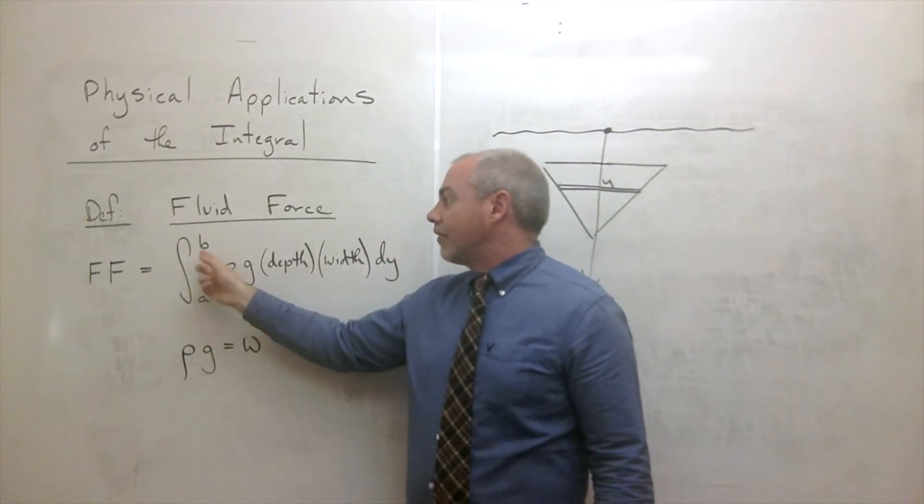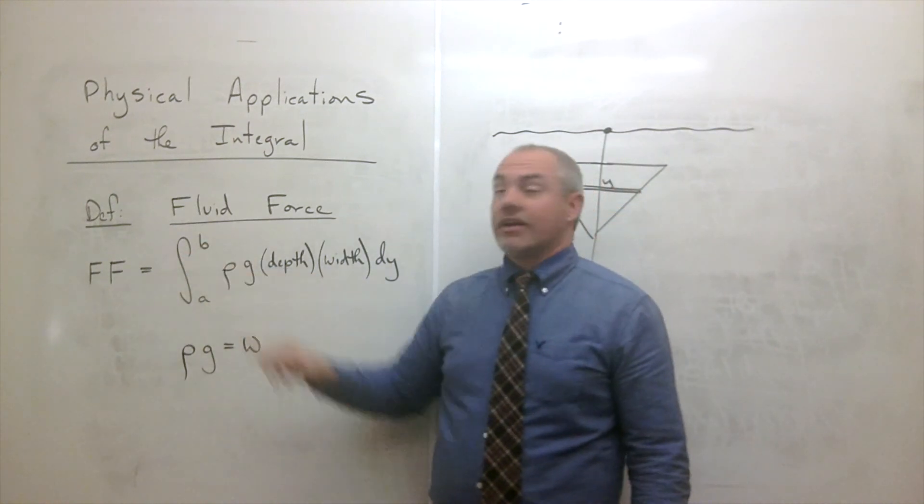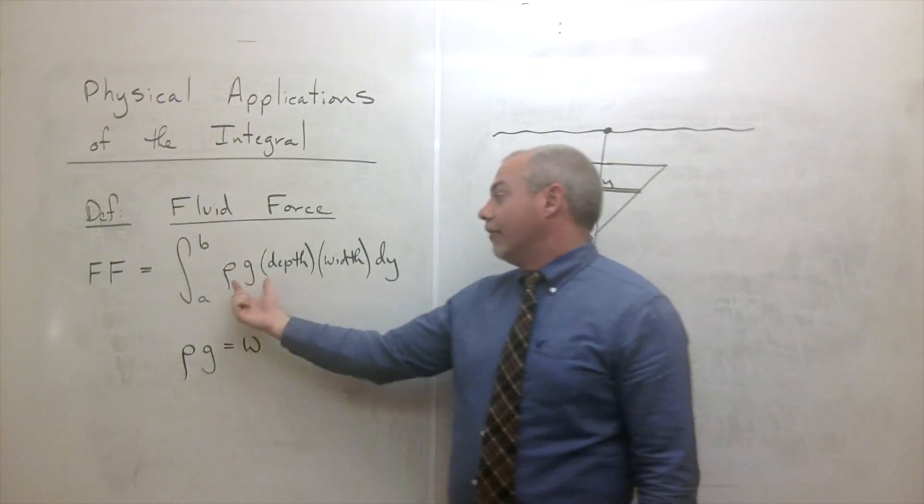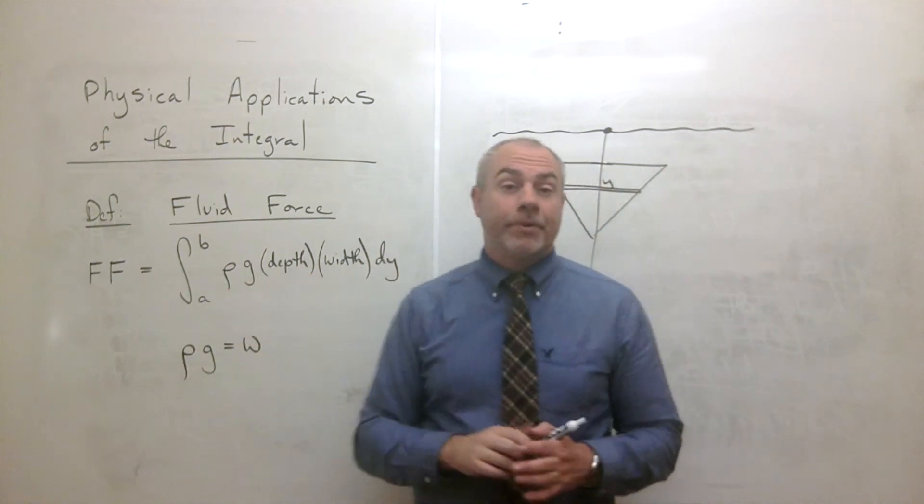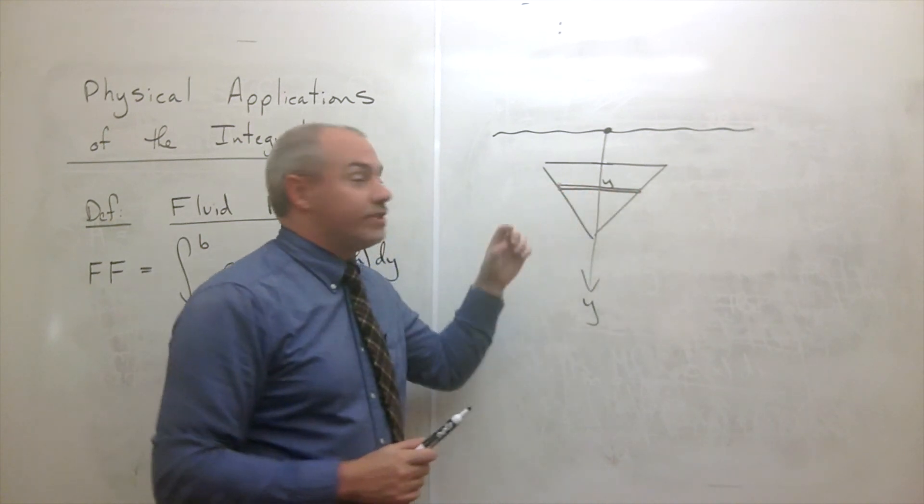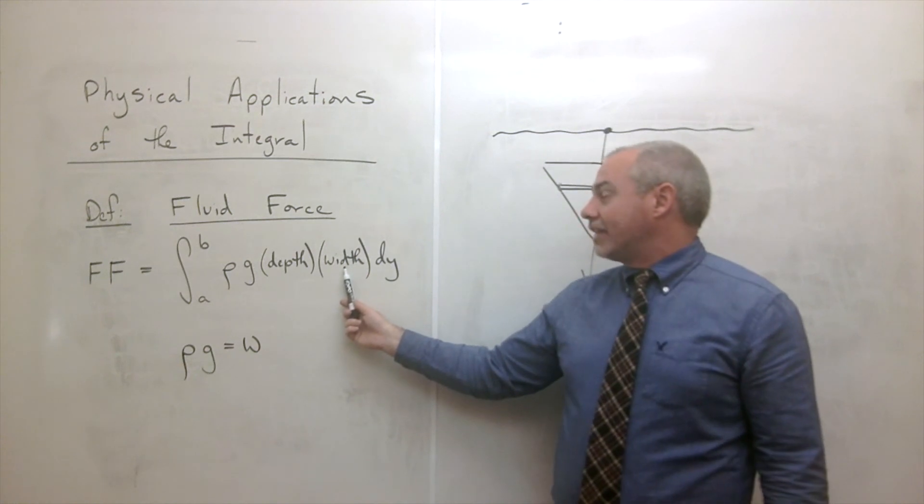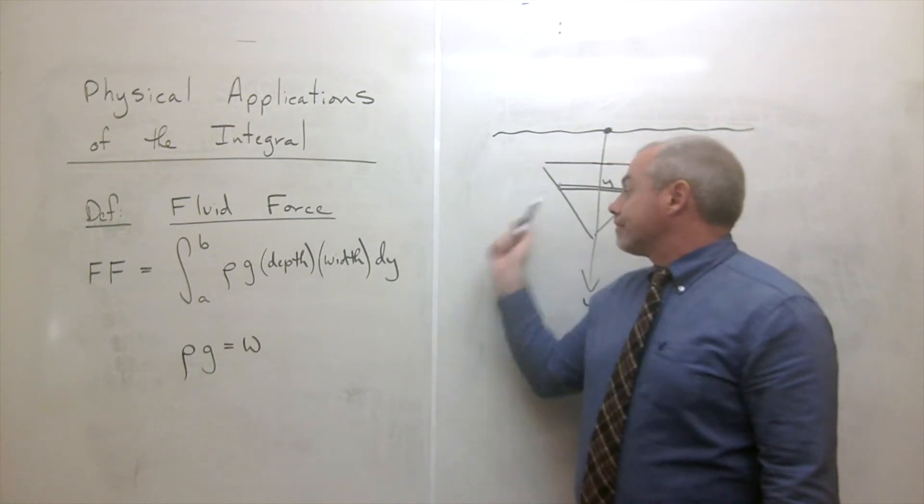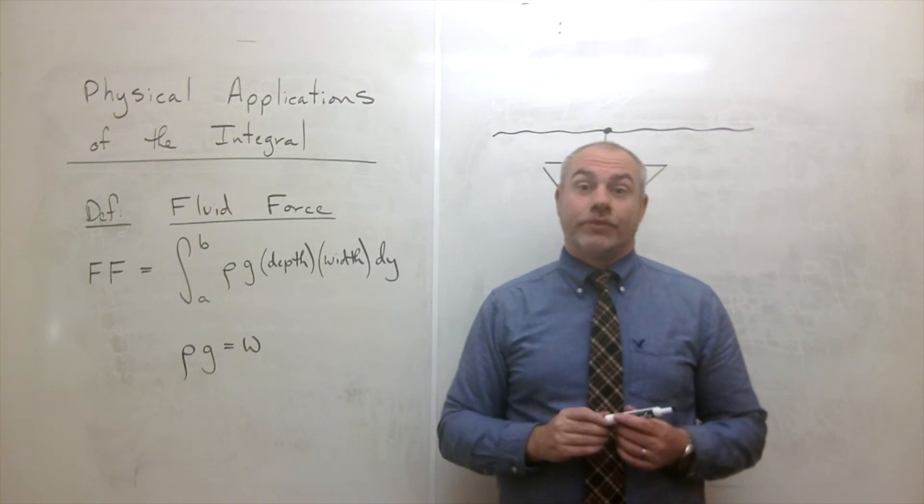This is how we're going to calculate fluid force: we need an integral from a to b, starting at some depth a and ending at another depth b, of weight density times the depth of that strip. You're always analyzing a little strip and how deep is the strip, times the width of the strip, dy. You take that integral and it will give you the fluid force on that plate.